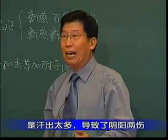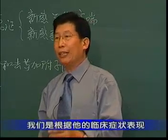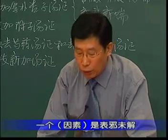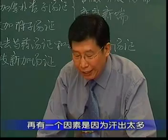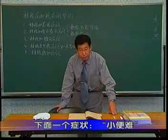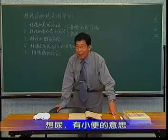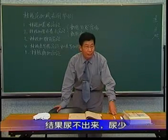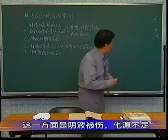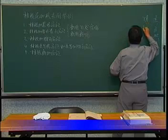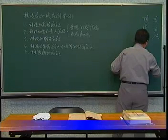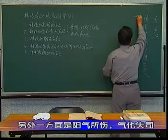而我们现在讲的这一条，它是汗出太多，导致了阴阳两伤。根据临床症状表现：其人恶风，一个是表证未解，仍然有恶风汗出；再有一个因素，是因为汗出太多，阳气被伤，温煦失司。下面一个症状，小便难，求之不得为之难，想尿，有小便的意思，结果尿不出来，尿少，一方面是阴液被伤，化源不足；另一方面是阳气被伤，气化失司。